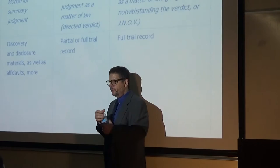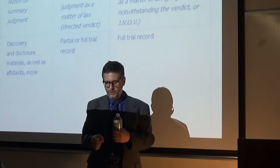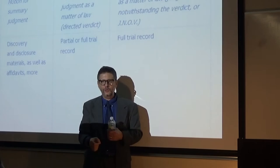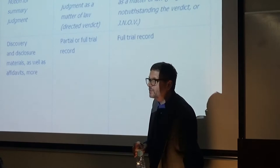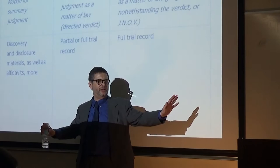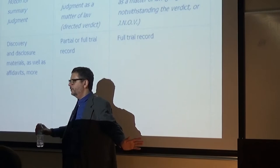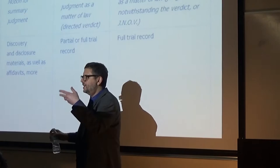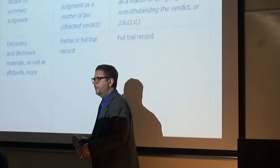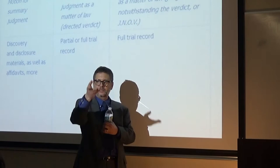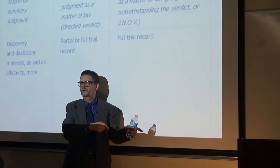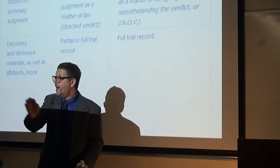A motion for judgment as a matter of law cannot be made until the opposing party has been fully heard on the issue. If I'm the plaintiff and I put on my case-in-chief and rest, then move for an immediate directed verdict under Rule 50A saying no reasonable juror could find against me — that motion ought to be denied because the defendant hasn't had an opportunity to put on his own case. But once the plaintiff's case-in-chief is done and it's the defendant's turn, the defendant could move saying no reasonable jury could find for the plaintiff. That is appropriate timing for a 50A motion. Either party could also move after all evidence has been entered and both parties have closed, but before the case goes to the jury.